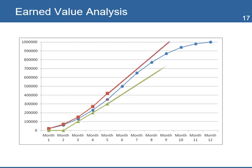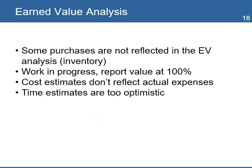With this information, you know that if you continue the project with the same trends in CPI and SPI, you will run out of money on month 9 and will not be able to complete all the health centers. You need to analyze and investigate the probable causes for these variations. Some purchases are not reflected in the EV analysis — actual costs can be higher because of inventory of material purchased that has not been used in the construction of the centers.